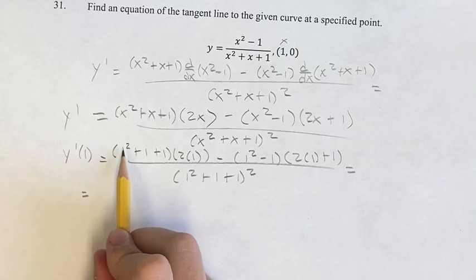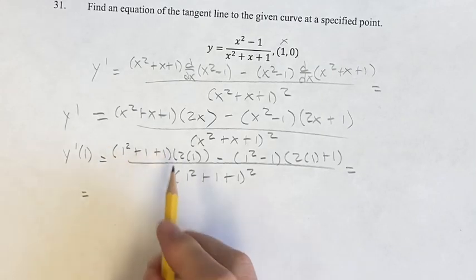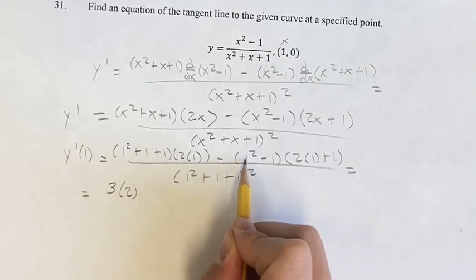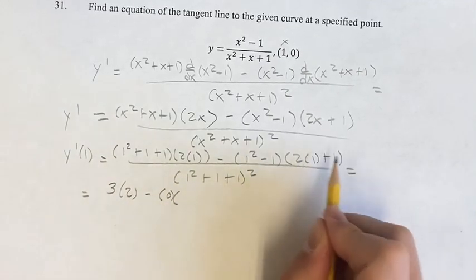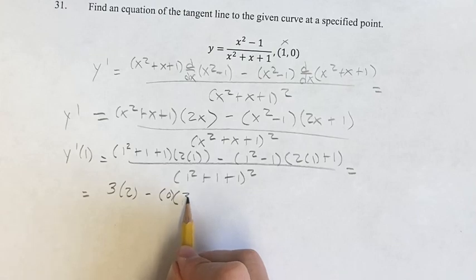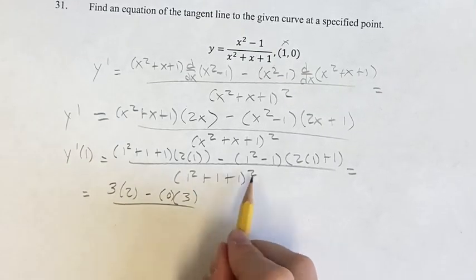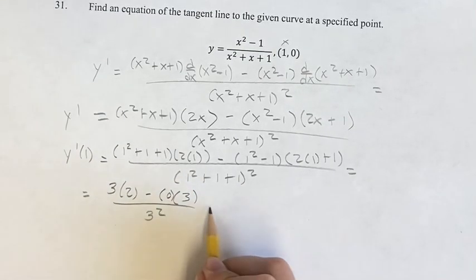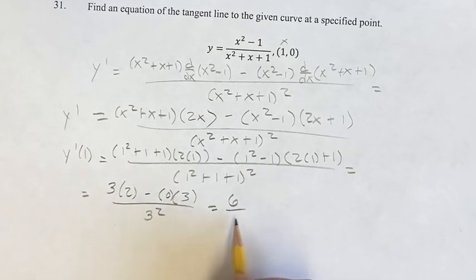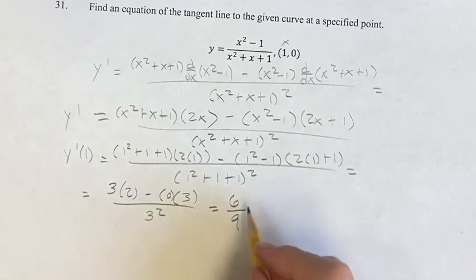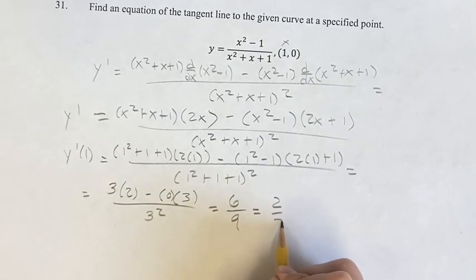This is equal to 1 squared is 1 plus 1 plus 1 is 3 times 2 minus 1 minus 1 minus 1. So minus 0 times 2 times 1 plus 1 is 3 over 1 plus 1 plus 1 is 3 squared. So this is equal to 3 times 2 is 6 minus 0 over 9. This is equal to 2 thirds. So the slope of the tangent line at this point is 2 thirds.